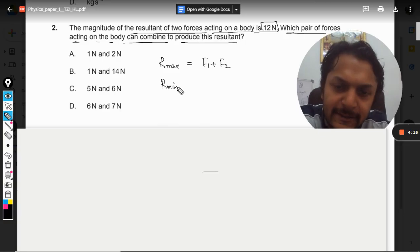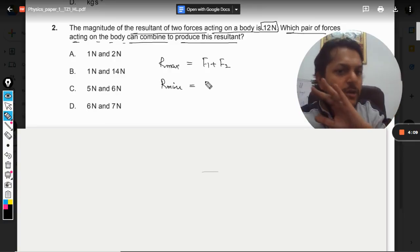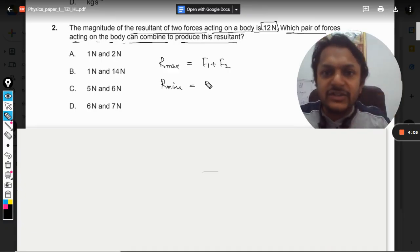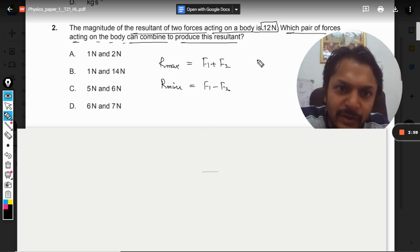And similarly, the resultant minimum will be when two forces are actually acting opposite to each other. One person is pushing the body to the right, another is pushing the body to the left. So they will get subtracted. So minimum value will be F1 minus F2.